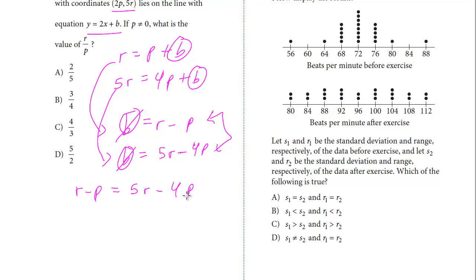Now, when you have variables like this, and we're asked to find R over P, you want to get them on either side. So I'm going to add 4P to both sides. I'm going to get 3P equals. I am going to subtract an R from both sides, 4R. We're almost done.